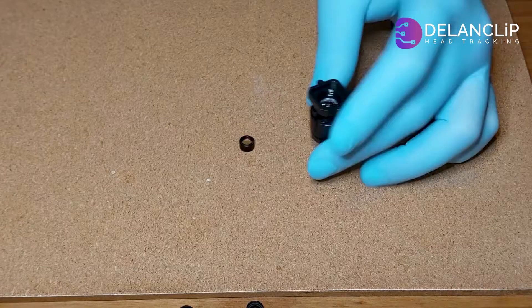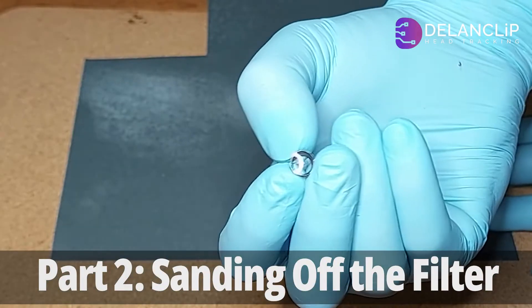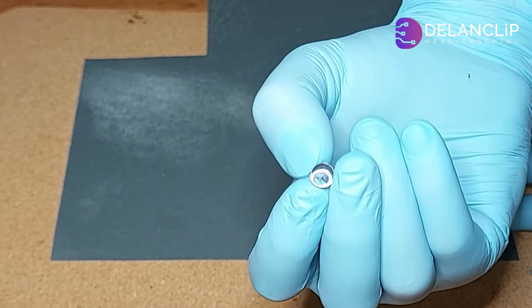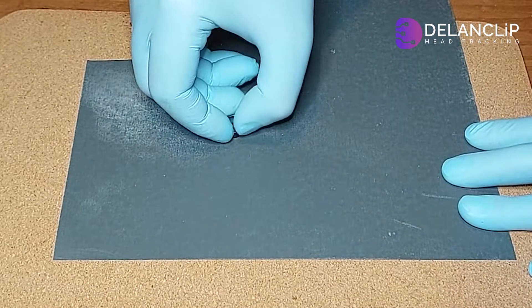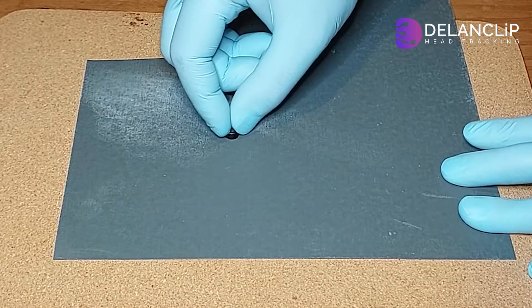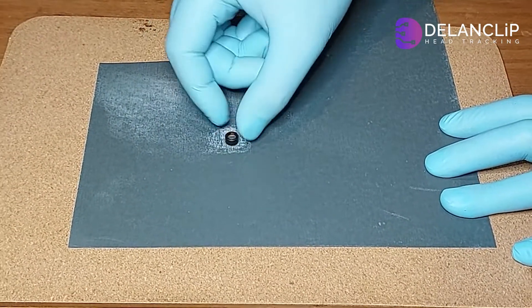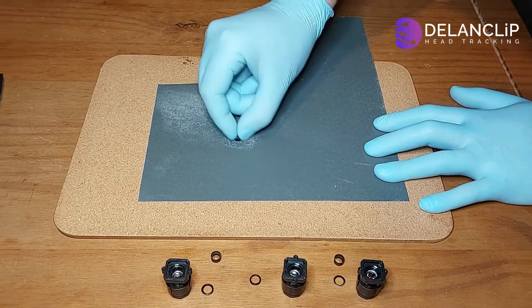Step 2. With the lens removed, we're ready for the main task: removing the purple IR filter. We'll start with 1500 grit sandpaper. Using gentle, circular motions, sand the lens surface with consistent pressure.